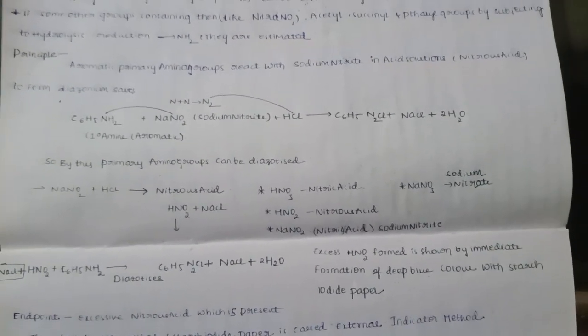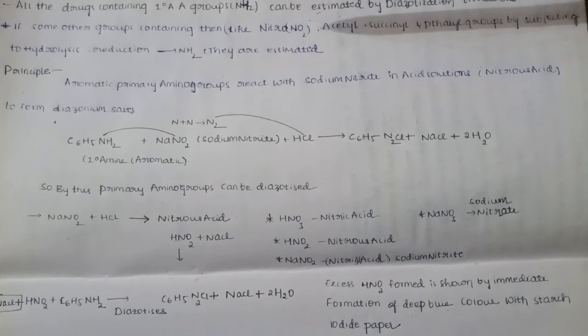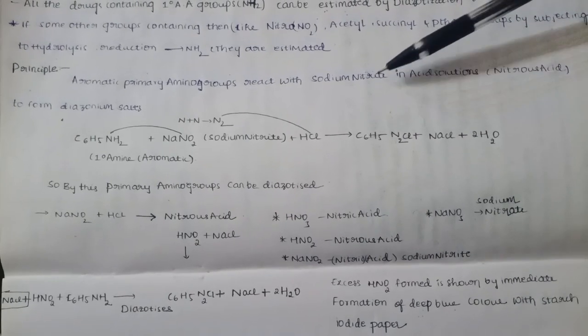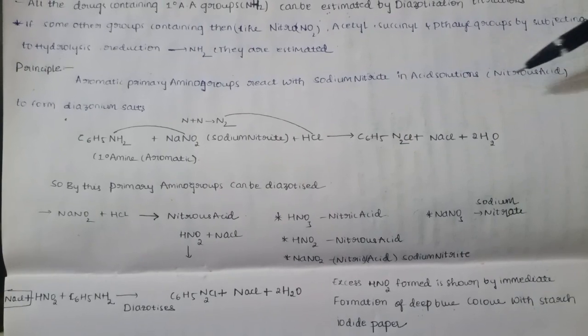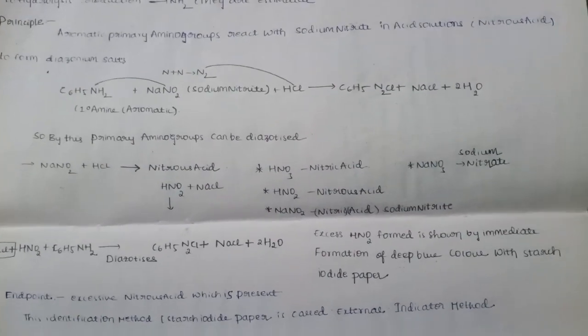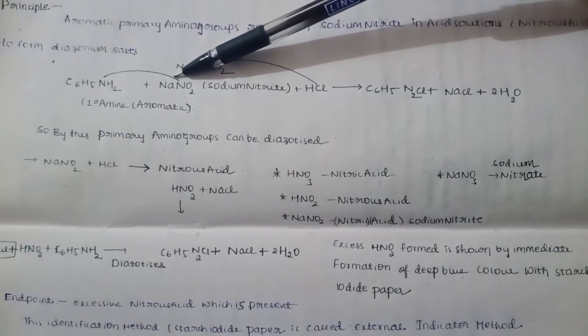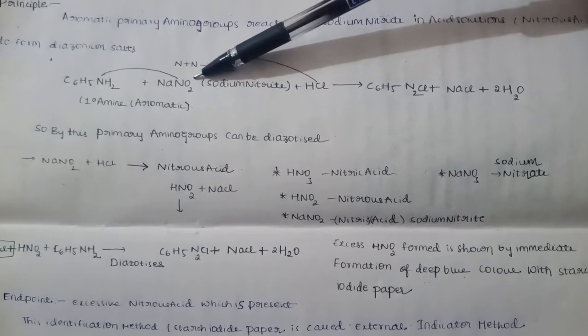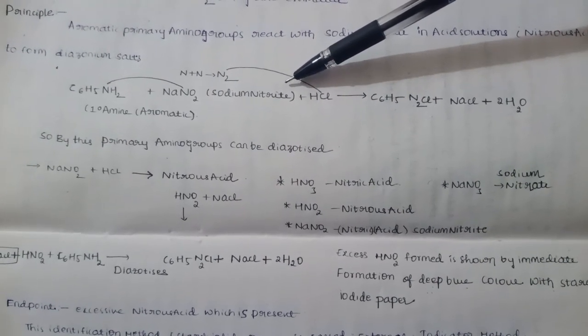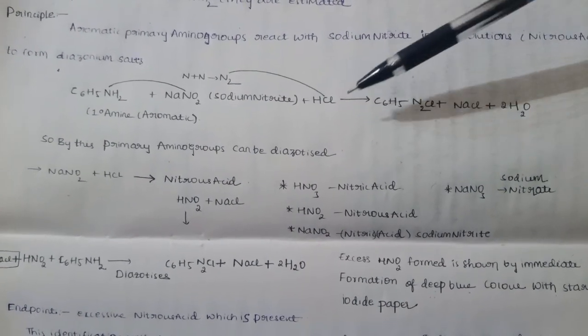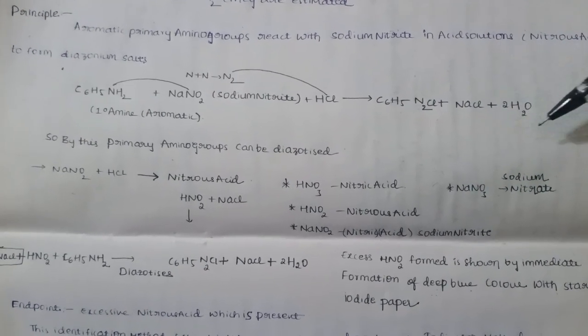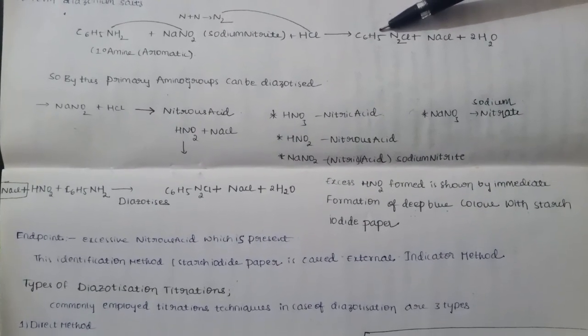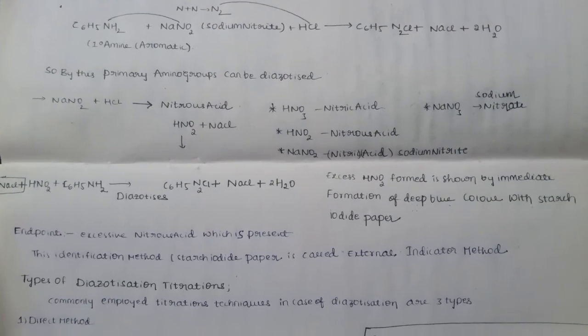The principle is that aromatic primary amino groups react with sodium nitrite in acid solution, that is nitrous acid, to form diazonium salt. The primary aromatic amine C6H5NH2 reacts with the titrating agent sodium nitrite NaNO2 in the presence of acid solution HCl.